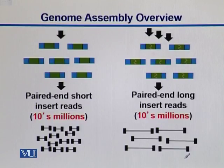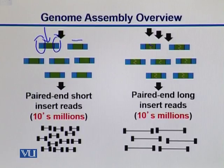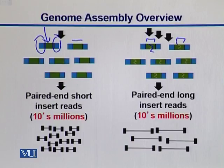We take these short and long fragments and we do paired-end sequencing. What we do here is we take these fragments and we submit only their ends for sequencing, and then the middle portion we skip — we call this part the insert. We have short inserts on one side, and on the other side we have long inserts. Both of them are obviously paired-end reads.